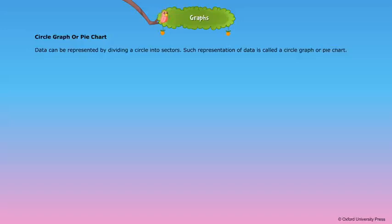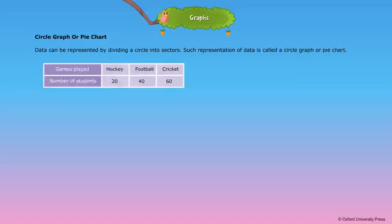Pie charts are circular. The circle is divided into parts based on the data given. It shows the relation of parts to the whole.